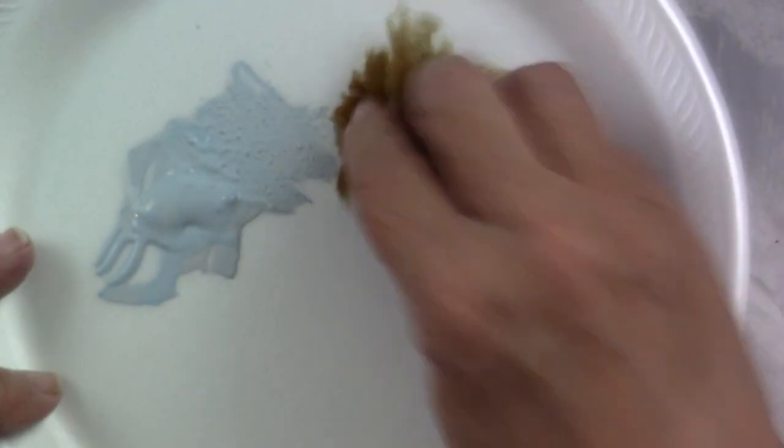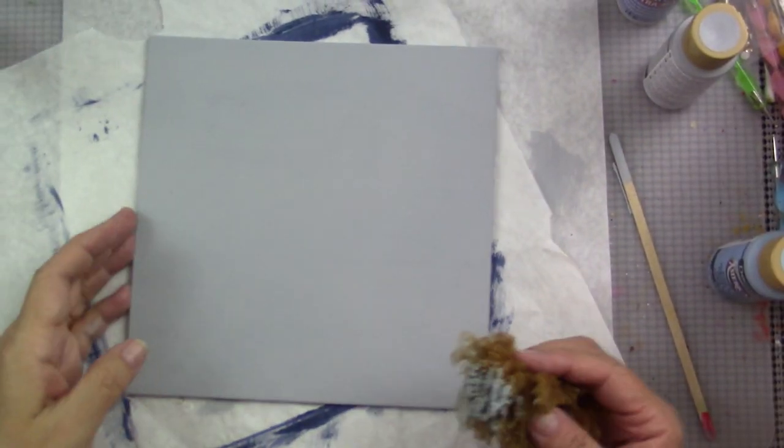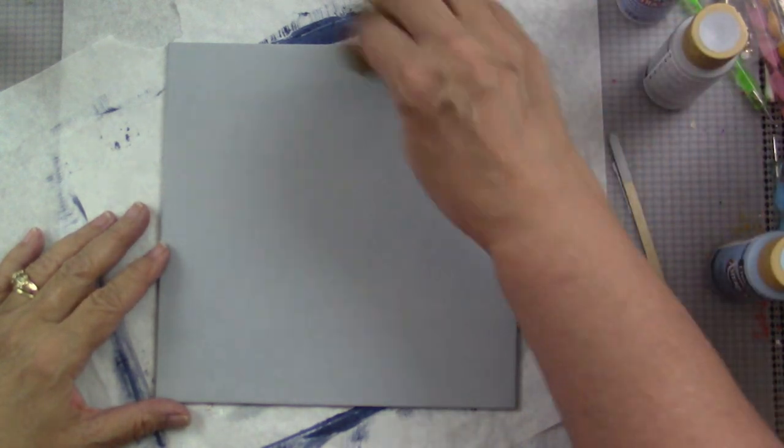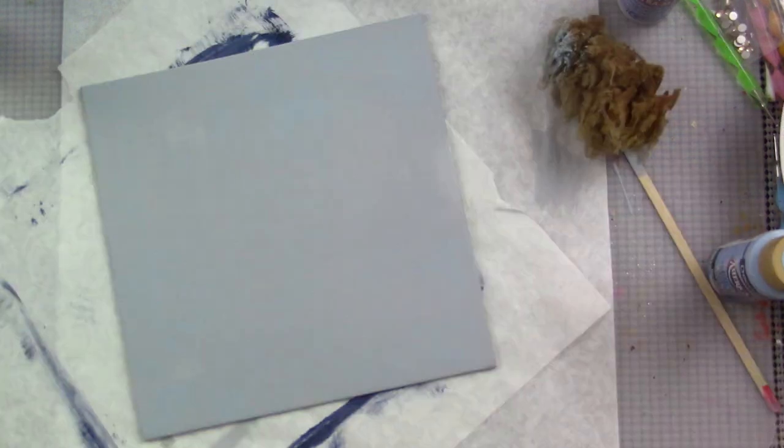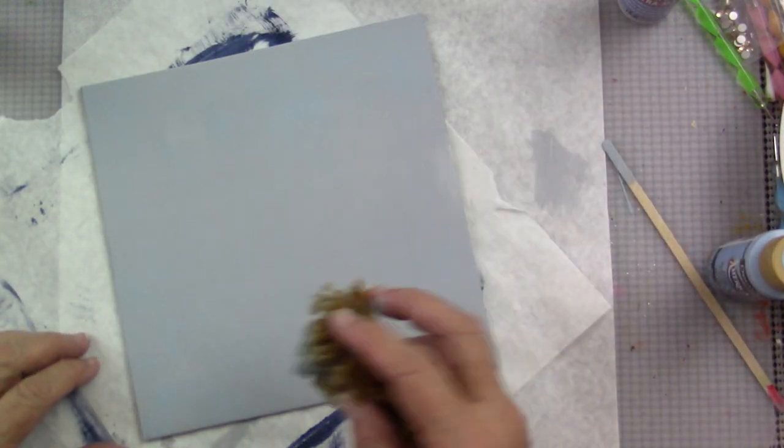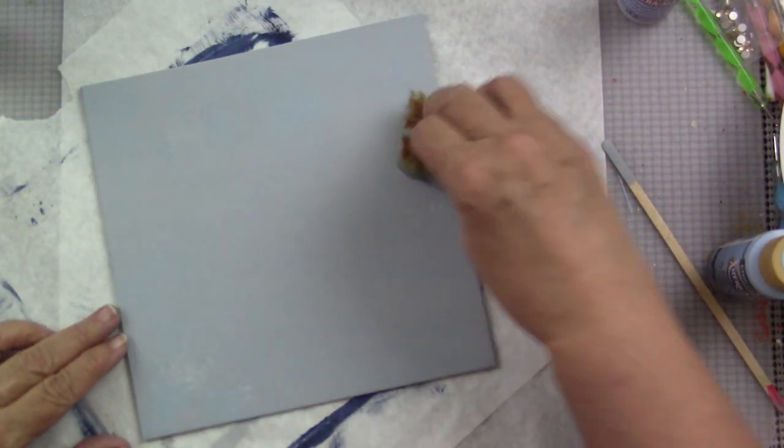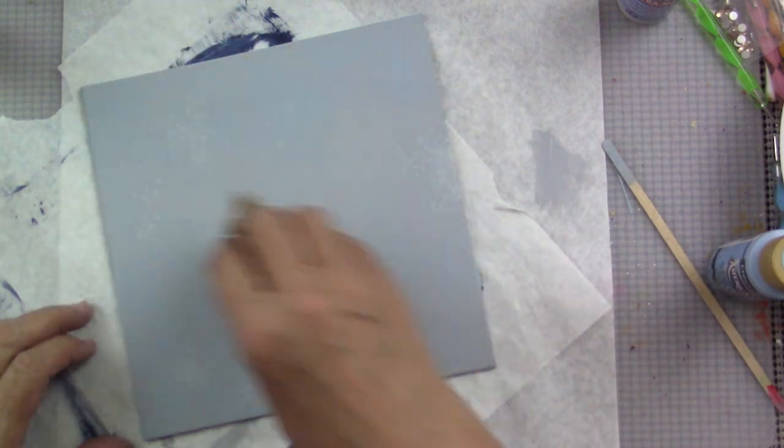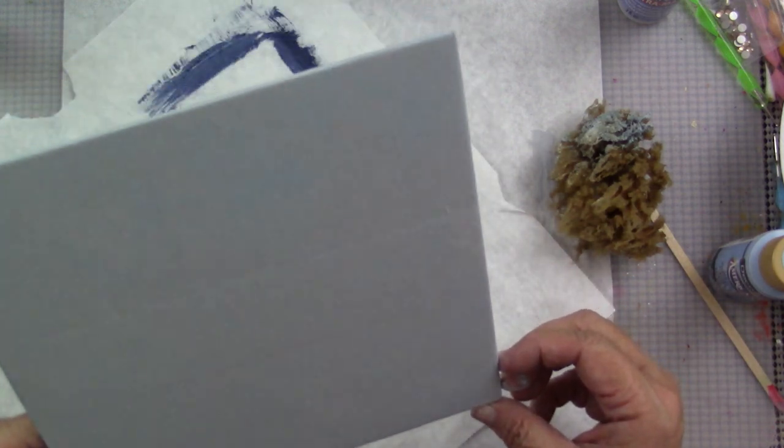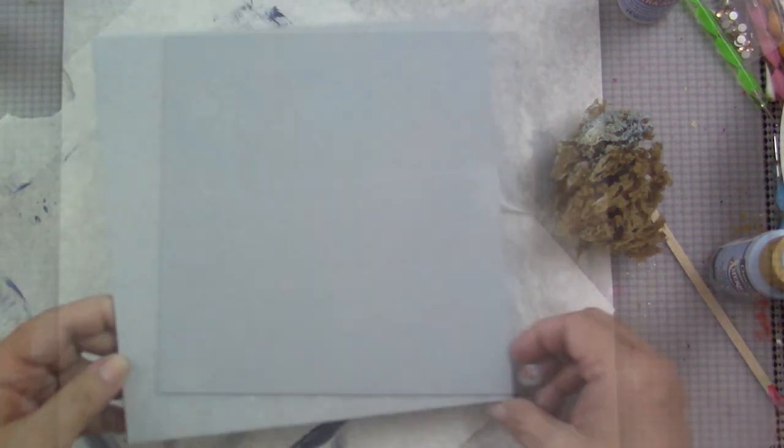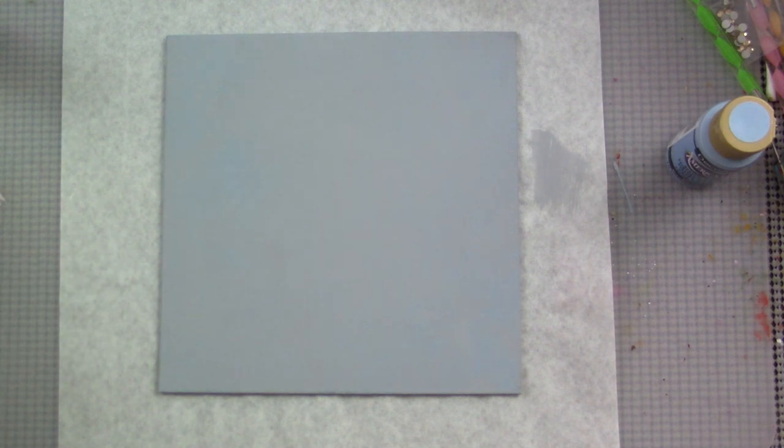I want this to be really subtle, so I'm not going for a big change in color, but just enough to give me a little background. Natural sponges give you a really rough texture, but use different tools you might have. Even a regular sponge would be great.